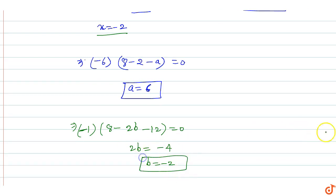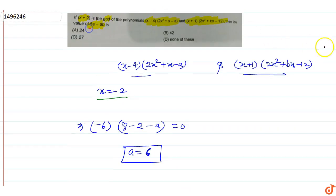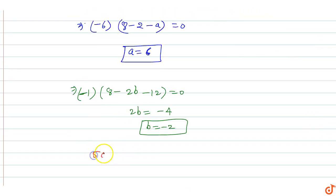Therefore b = -2. Now to find 5a-6b: 5a-6b equals 5×6 minus 6×(-2).